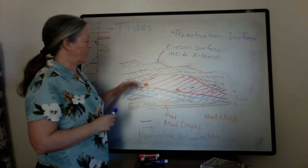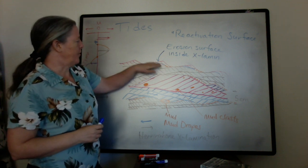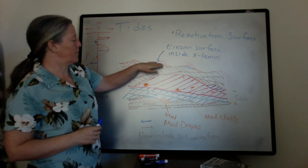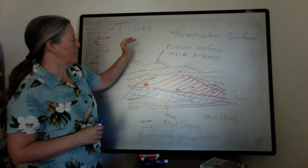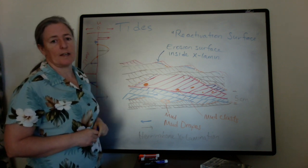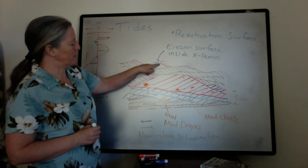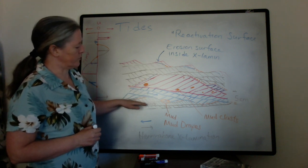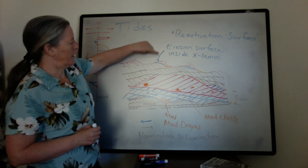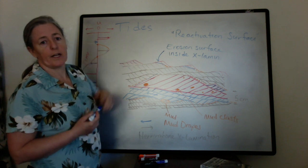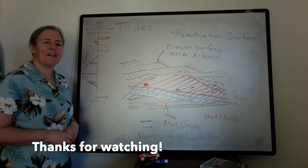What that means is that you had an active ripple. The flow changed and eroded the top of the ripple and then the ripple reactivated in the same direction again. So this is much more subtle than these large changes in flow directions reflected by multiple lamina. But it also indicates that you have a variation in flow direction through time.